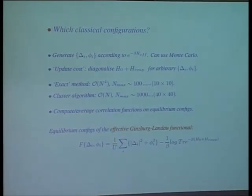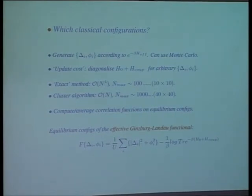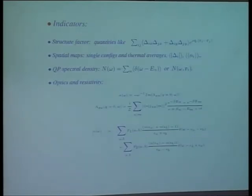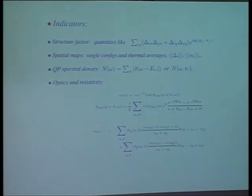Once you equilibrate and your energy has stabilized with equilibrium fluctuations, you can compute correlation functions of the auxiliary fields or the fermions themselves in these equilibrium backgrounds. Although we do not use this form explicitly, you are generating configurations which are samples of an effective Ginzburg-Landau theory and solving fermions in those self-consistent backgrounds. This is mean field theory promoted to a field theory at finite temperature. What do you keep track of? Auxiliary field indicators like the delta-delta correlation, ultimately leading to the superfluid structure factor. You can keep track of spatial maps, density of states, optics, and resistivity.